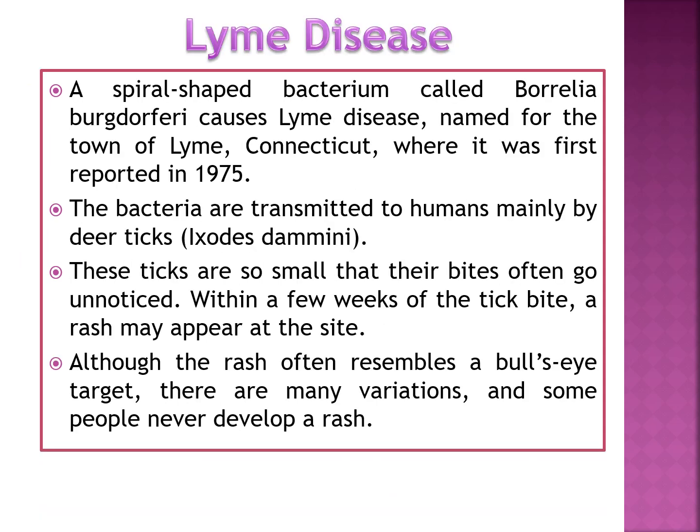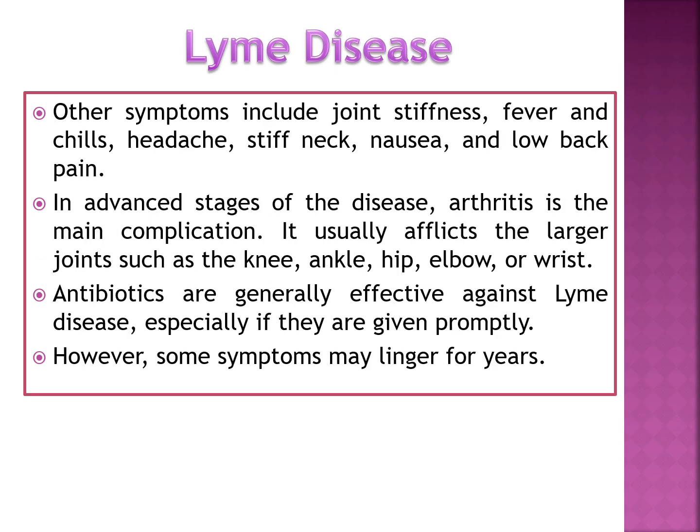The next disorder is Lyme disease. A spiral-shaped bacterium called Borrelia burgdorferi causes Lyme disease, named after Lyme, Connecticut, where it was first reported in 1975. The bacteria are transmitted to humans mainly by deer ticks, which are so small that their bites often go unnoticed. Within a few weeks of a tick bite, a rash may appear at the site — often resembling a bull's-eye target, though many variations exist. Other symptoms include joint stiffness, fever and chills, headache, stiff neck, nausea, and low back pain.